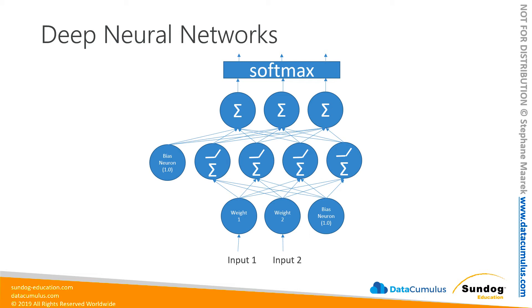The details aren't really important for the exam. There's a lot of depth we could go into about how it gets trained — backpropagation, gradient descent, and all that — but you don't need that for the exam. The only thing you need to know is that it's called deep learning because there's more than one layer of neurons. Basically, it's stacked layers of neurons connected together in different ways, and those weights between each neuron form the basis of your neural network.